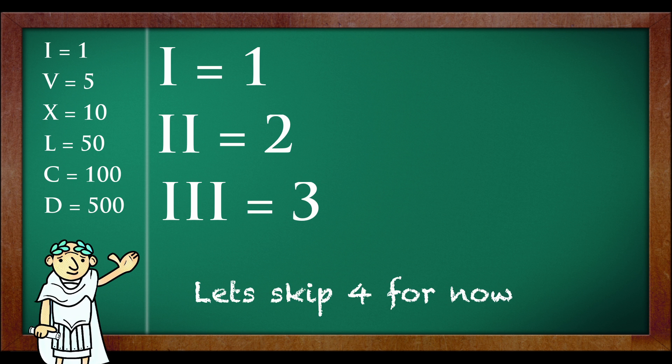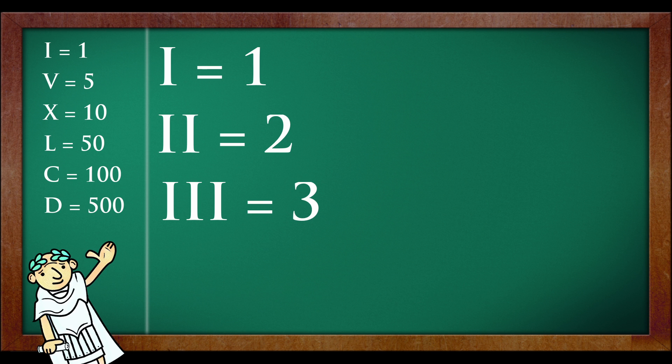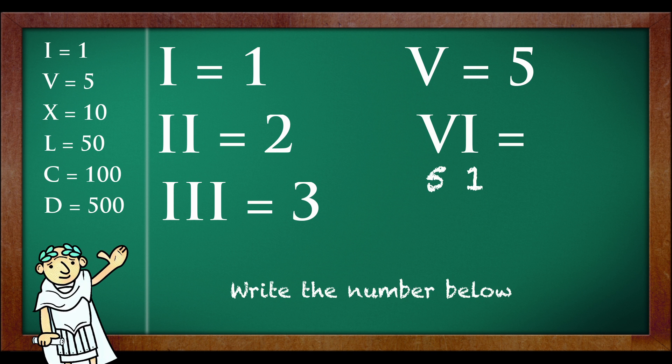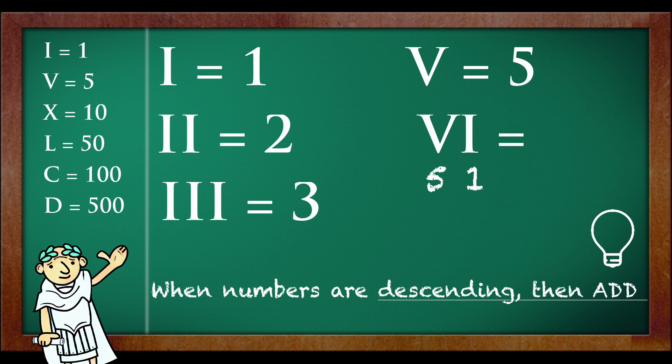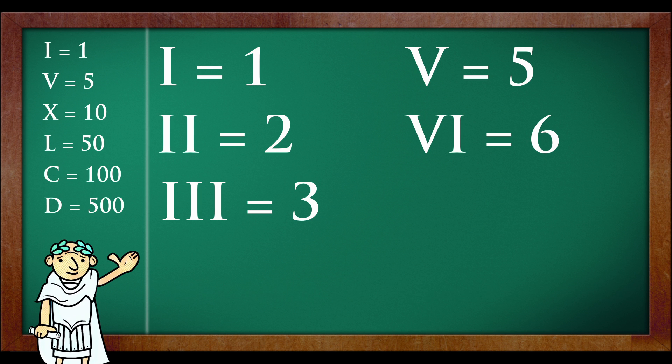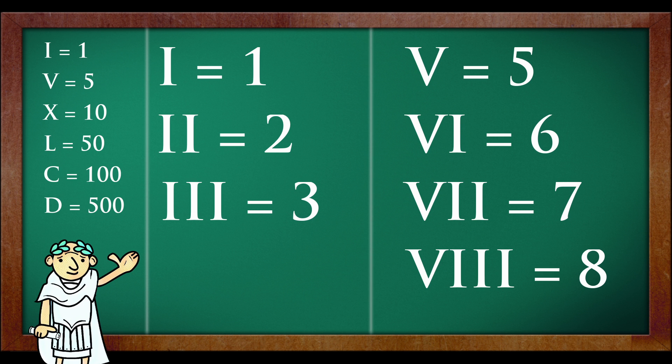Let's skip 4. Now from the table, you know V is 5. Now what is VI? Simple! Write the numbers first below. Then when the numbers are in descending order, then you add it. 5 plus 1 is equal to 6. Similarly, with 7 and 8, add 5 plus 1 plus 1 which is equal to 7 and for 8, 5 plus 1 plus 1 plus 1 is equal to 8.